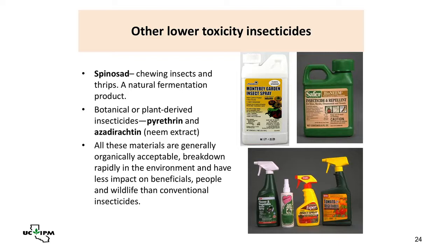The main botanical insecticides available now are pyrethrum (from the chrysanthemum daisy) and azadirachtin (extracted from the neem seed). These are two different products from the same neem seed — neem oil comes from pressing the seed, while azadirachtin is a chemical extract. Both are more broadly toxic but break down very rapidly in the environment, which is why they are more compatible with natural enemies and not highly toxic to wildlife or people.